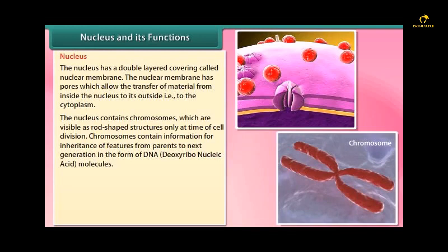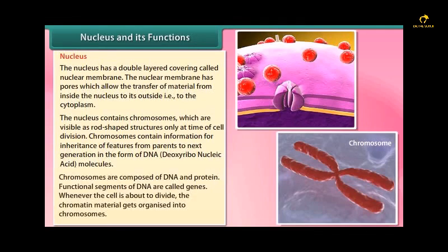Chromosomes contain information for inheritance of features from parents to the next generation in the form of DNA (deoxyribonucleic acid) molecules. Chromosomes are composed of DNA and protein.